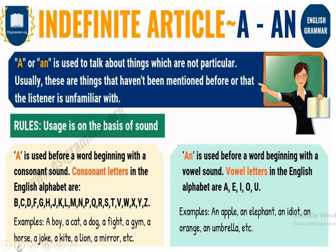A or AN is used to talk about things that are not particular — usually things that haven't been mentioned before or that the listener is unfamiliar with. The rule is based on sound: 'A' is used before words beginning with a consonant (B, C, D, F, G, H, J, K, L, M, N, P, Q, R, S, T, V, W, X, Y, Z). Examples: a boy, a cat, a dog, a fight, a gym, a horse, a joke, a kite, a lion, a mirror, and so on.